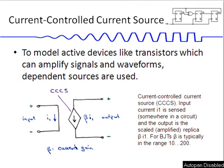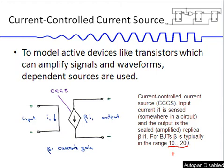In this video we're going to take a look at how to model bipolar junction transistors with controlled sources. What we have here is a current-controlled current source where the input is i1 and the output is beta times i1, where beta typically is a number in the range of about 10 to 200. The transistor acts as an amplifier of the current from the input to the output.